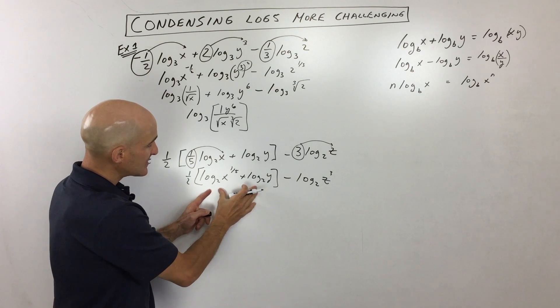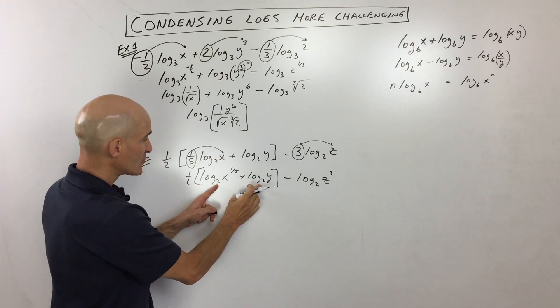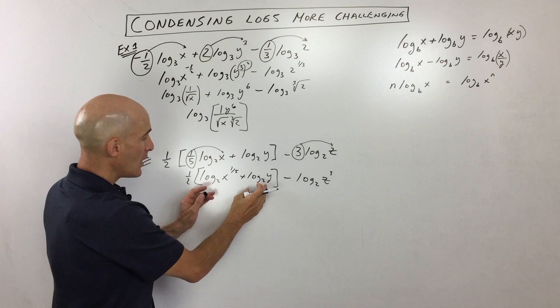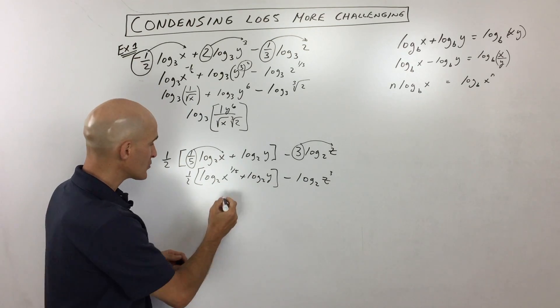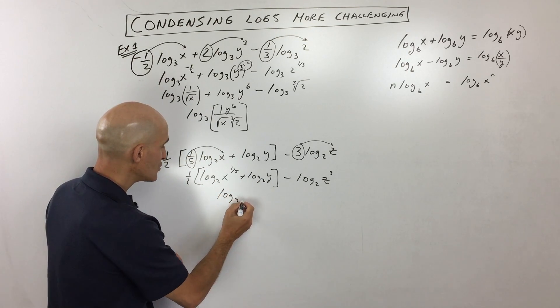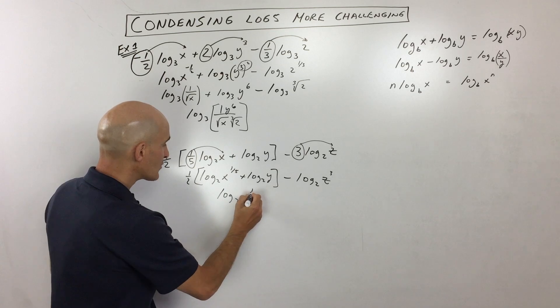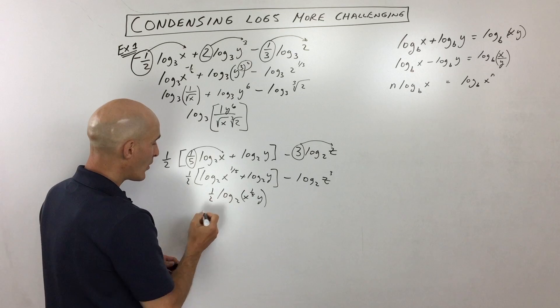Now let's work with the inside the parentheses here. When we add, as long as we have the same base, which we have base 2, we can multiply those arguments together. So we can write this as log base 2 of x to the 1 5th, y, and then you can see that 1 half in front.